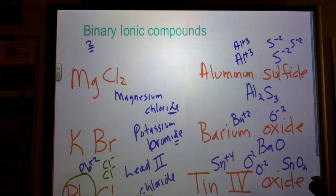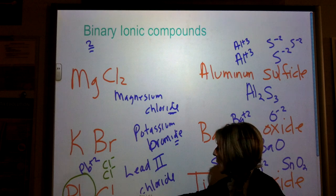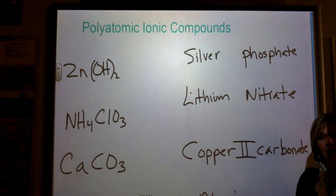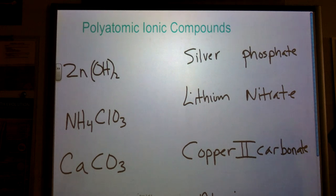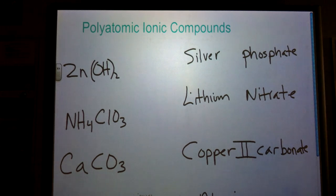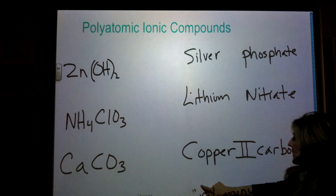So those are binary ionic compounds — two atoms, a metal and a nonmetal together, always ending in -IDE. So now we have the polyatomics. The polyatomic compounds are going to have one of those ten that I had you memorize. We're going to go from names to formulas and then formulas to names.